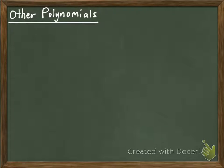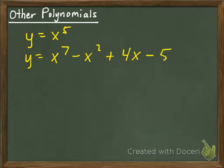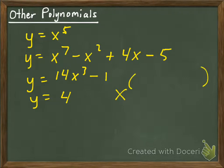Let's move on to other polynomials. Let's review what a polynomial is: y equals x to the fifth, y equals x to the seventh minus x squared plus 4x minus 5. These are polynomials. Why are they polynomials? You should be able to answer this question. 14x cubed minus 1, y equals 4, which we just talked about, the specific polynomials that are constants. Where x is raised to a power that is a whole number.